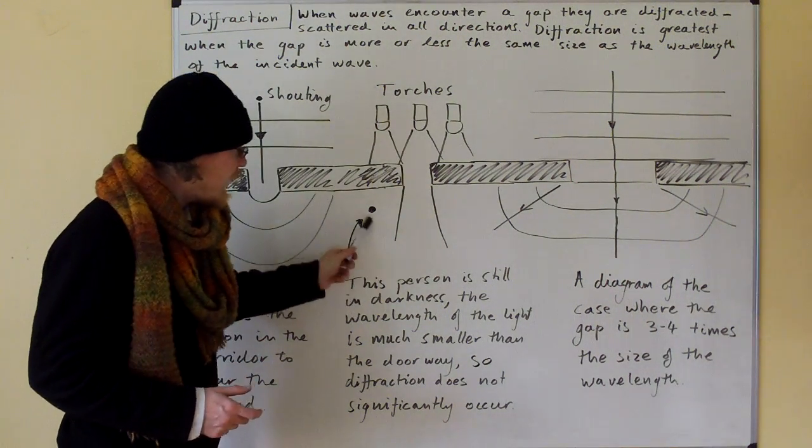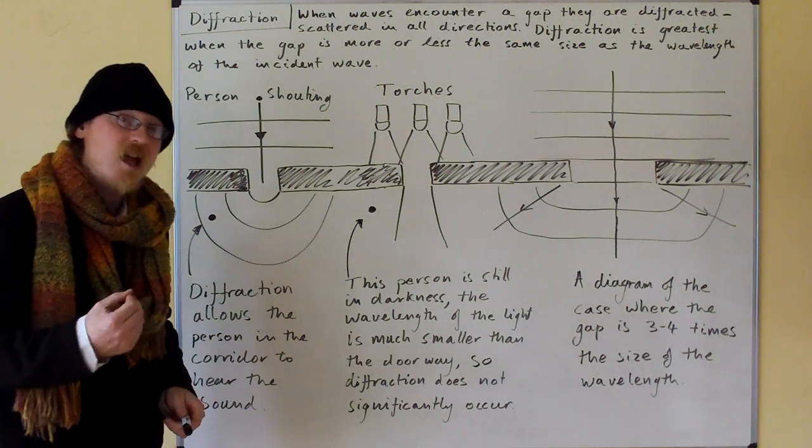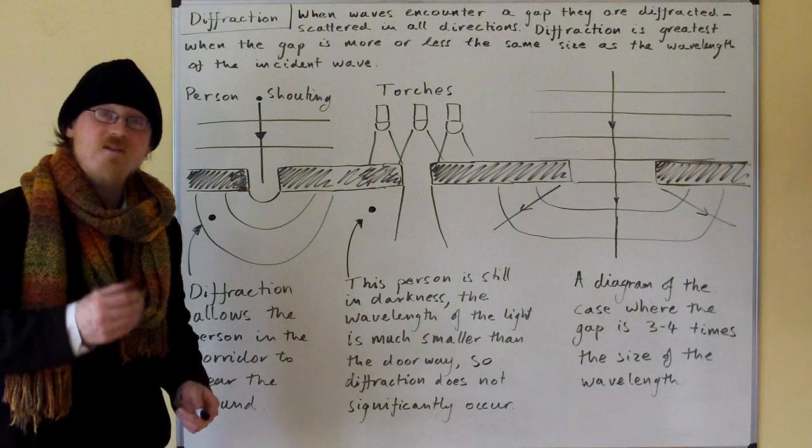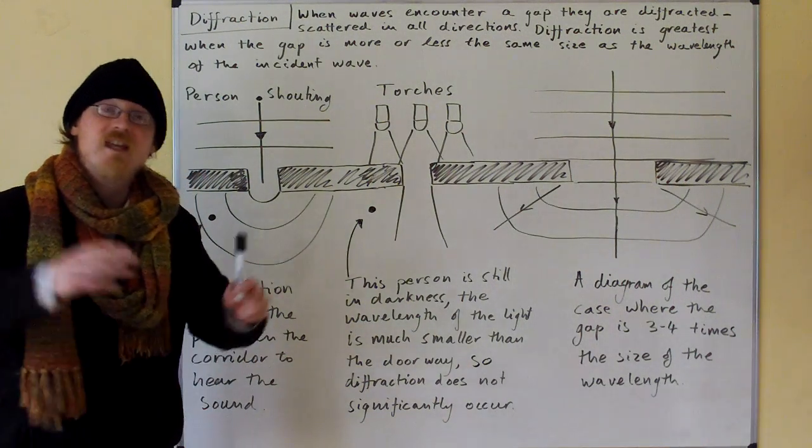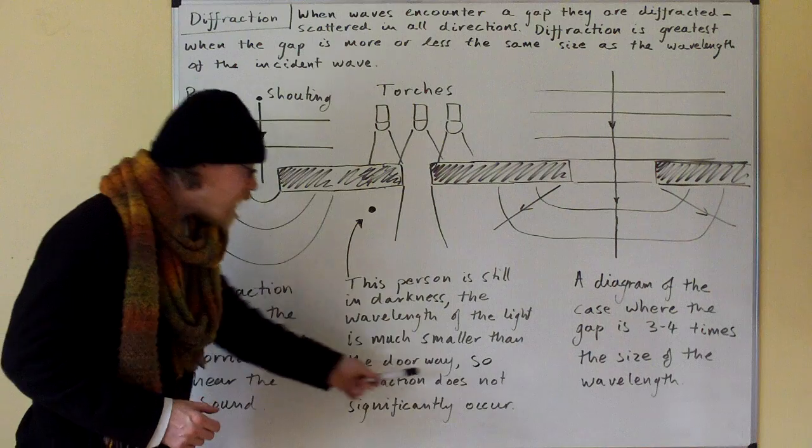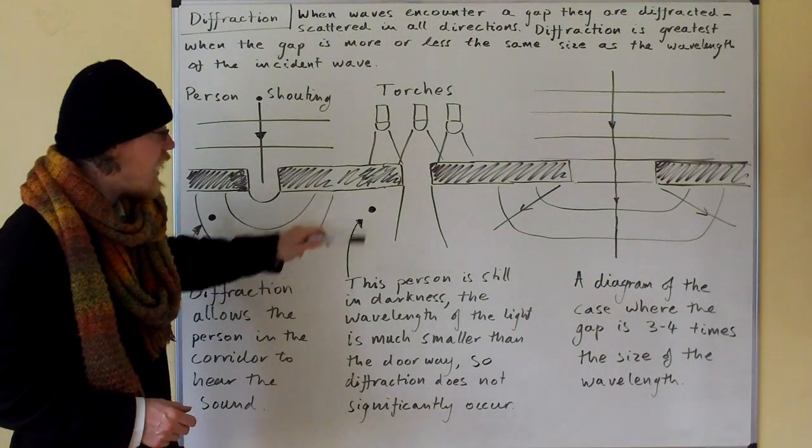But this person here is still in darkness. The wavelength of the light is much smaller than the doorway. The wavelength of light is very tiny and the doorway is comparatively huge. So diffraction does not occur and this person remains in darkness.